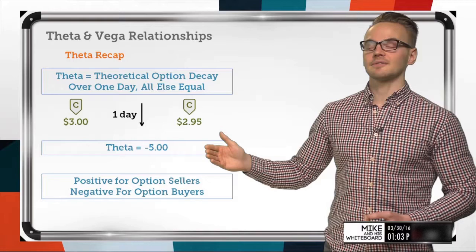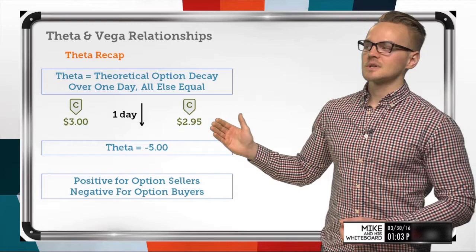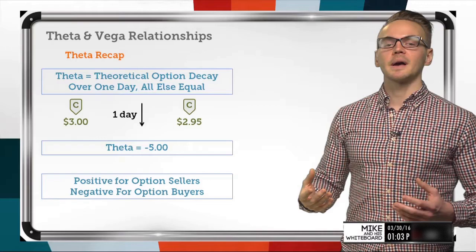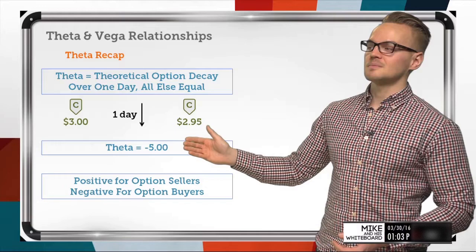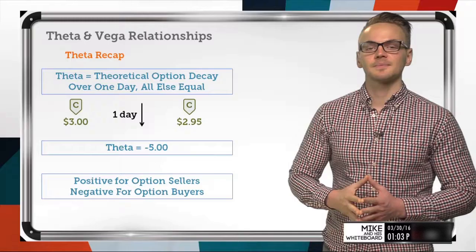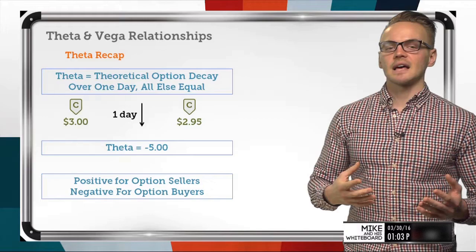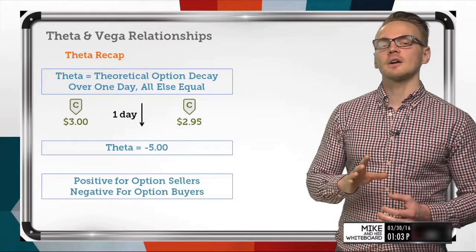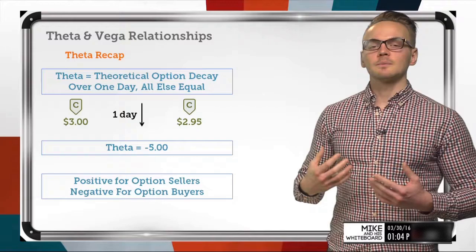If the option is decaying and I sold it at three dollars and it's now worth two ninety-five, that gives me the ability to buy that call back at a lower price, resulting in profit. So theta is positive for option sellers and negative for option buyers. Theta changes over specific market conditions, and we'll compare that side by side with vega shortly. First, let's review vega.